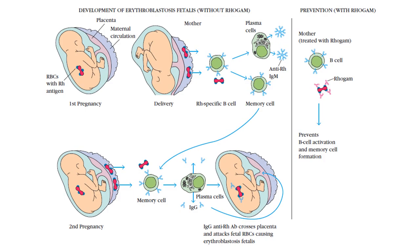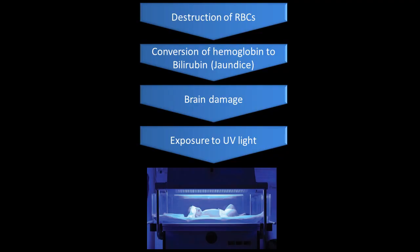In erythroblastosis fetalis, the fetal RBCs undergo destruction. With abnormal destruction of RBCs, the hemoglobin present in those RBCs is converted into bilirubin. Since these RBCs are destroyed in the blood rather than in their designated site, bilirubin is now present in the blood. Bilirubin has a yellow color, so the skin becomes yellow — a condition similar to jaundice, though we do not say the fetus has jaundice.